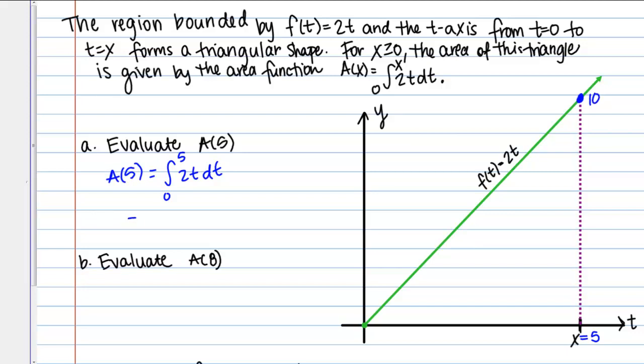Then to find the area of the triangle, I just use 1/2 base times height. 1/2 base is 5, height is 10. This is 1/2 times 50, which is 25.